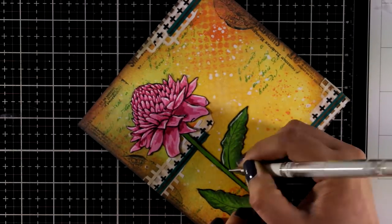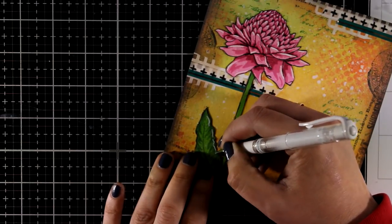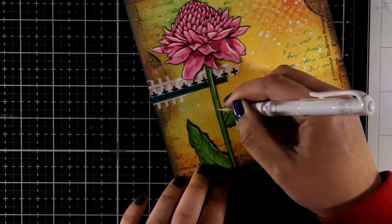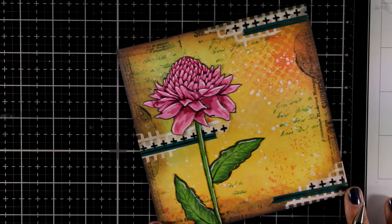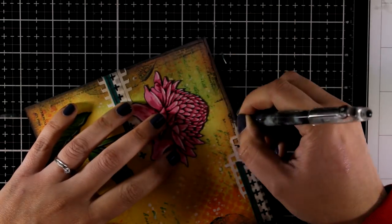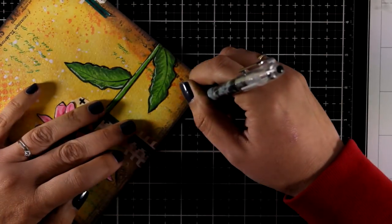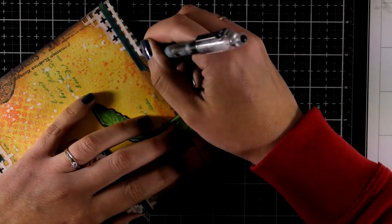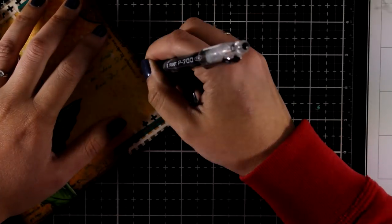Here is a close-up look where you can see exactly what I'm doing, adding highlights on the leaves and on one side of the stem. You can also use your black marker or white marker to add some lines all around, just to frame your art a little bit more. Doodling is always fun.